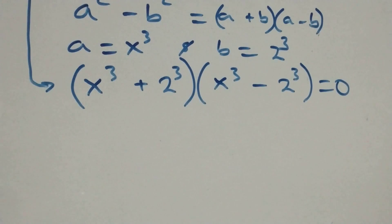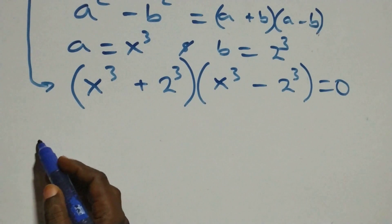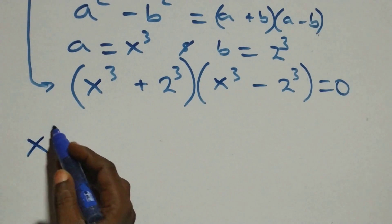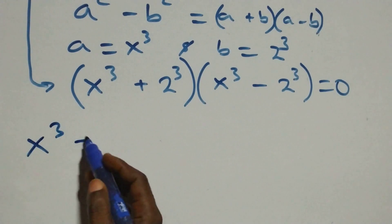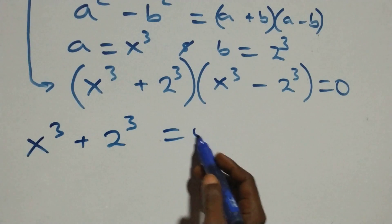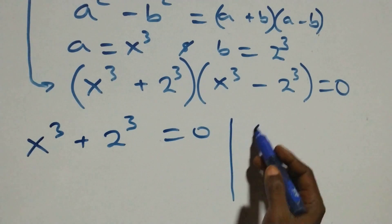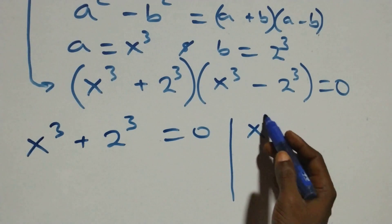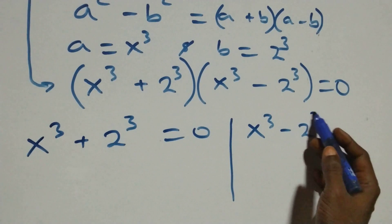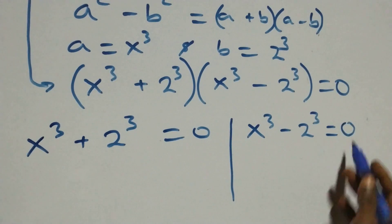That gives us two possible cases: the first is x raised to power 3 plus 2 raised to power 3 equals 0, or we have x raised to power 3 minus 2 raised to power 3 equals 0.